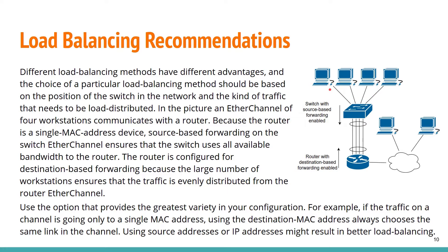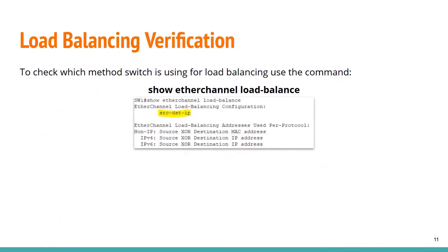The router is configured for destination-based forwarding because the large number of workstations ensures traffic is evenly distributed from the router. Use the option that provides the greatest variety in your configuration — for example, if traffic on a channel is going only to a single MAC address, using the destination MAC address will always choose the same link. Using source addresses or IP addresses might result in better load balancing. To check which method the switch is using, use the command 'show etherchannel load-balance' — in the output you can find the currently configured method, for example src-dst-ip.